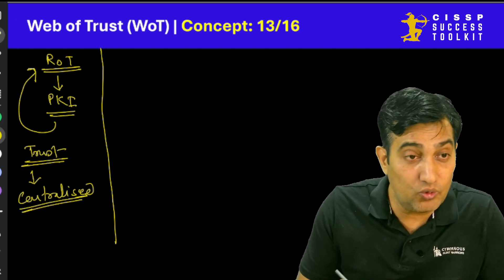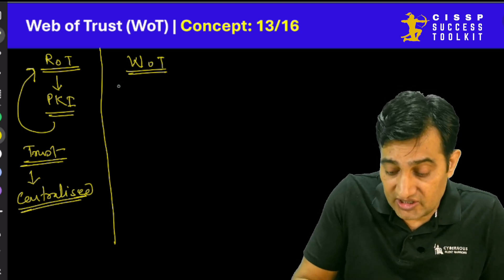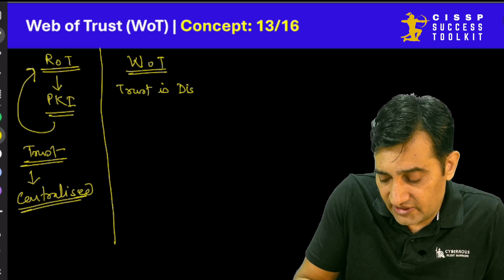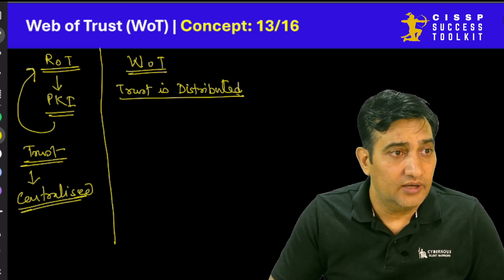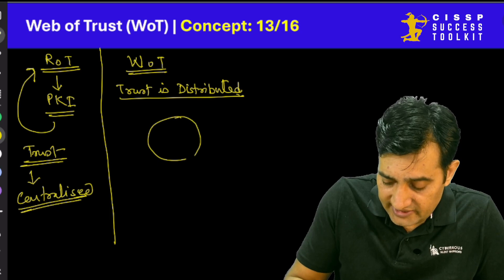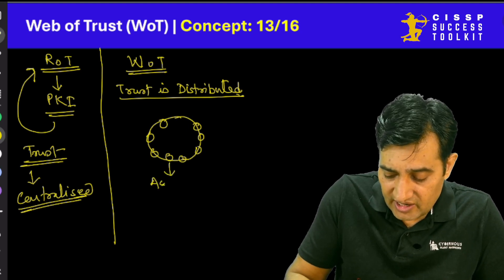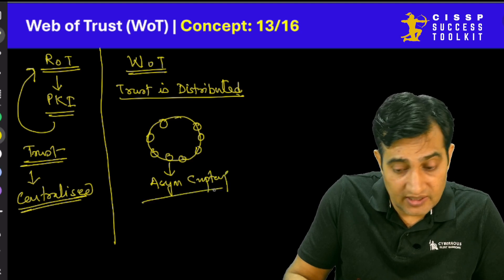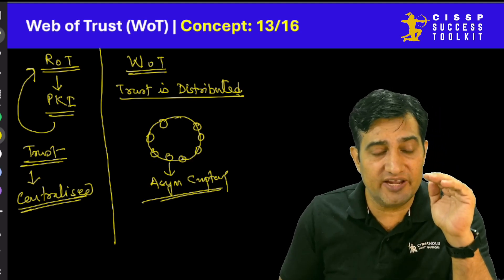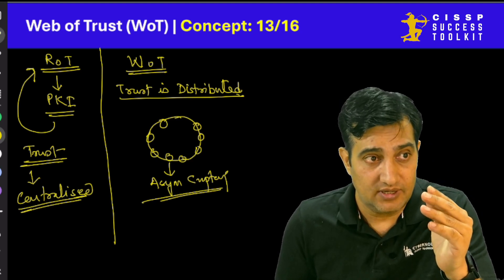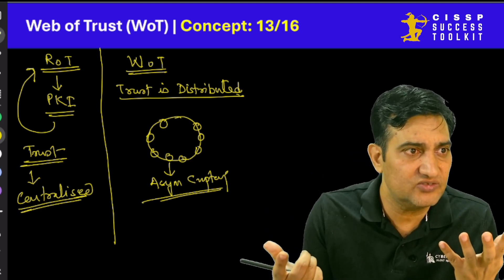In web of trust, we are not going with the centralized approach. When we say web of trust, it is a model where the trust is distributed. Let's say there is an environment with 10 users. They are all using asymmetric cryptography, but they are not using a central CA. The main purpose of CA is to give you assurance that a particular public key is really attached to some valid entity — that is the assurance we get by having a CA.